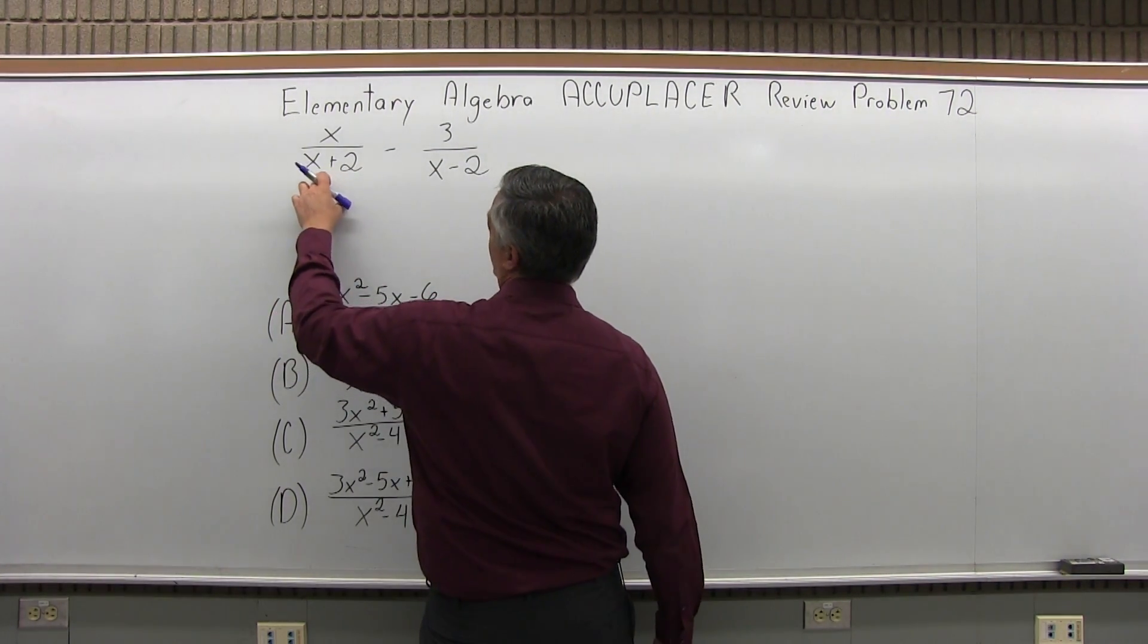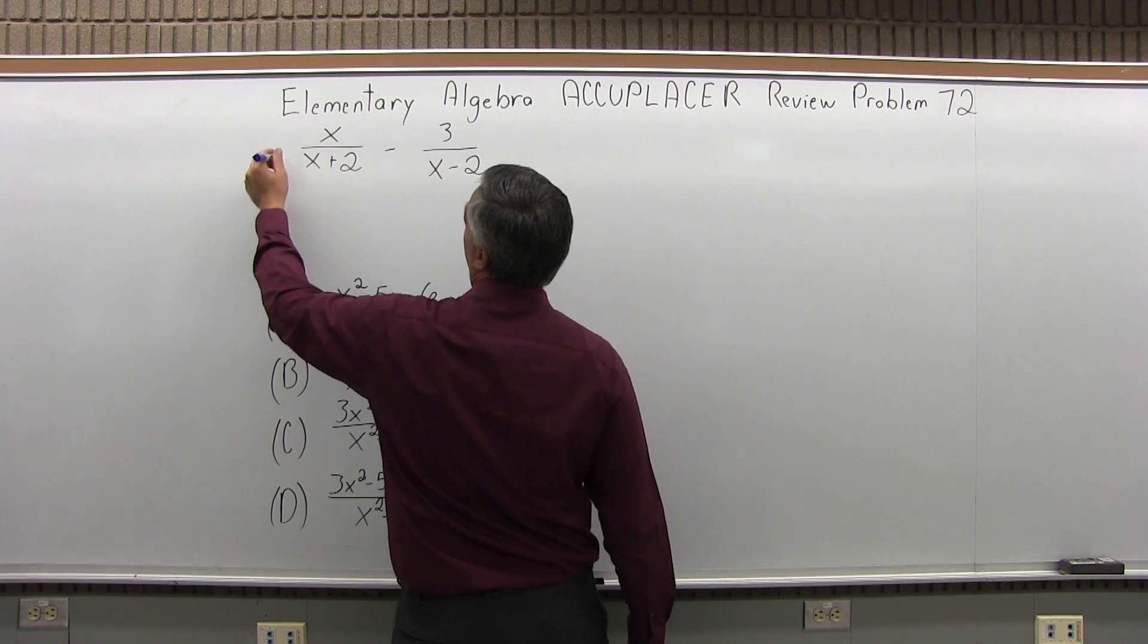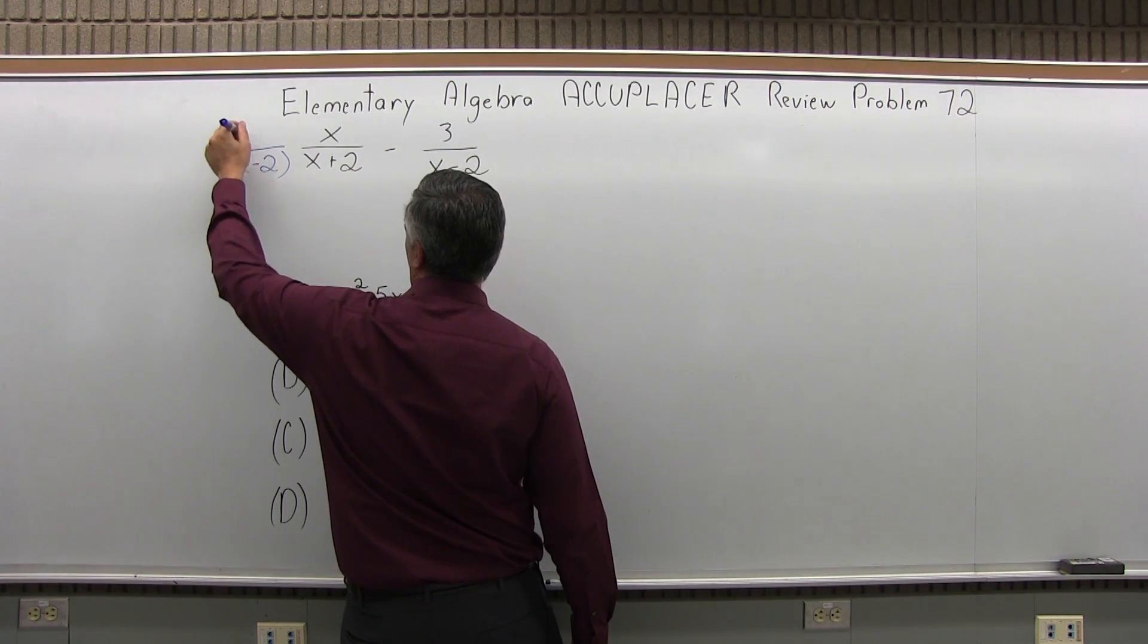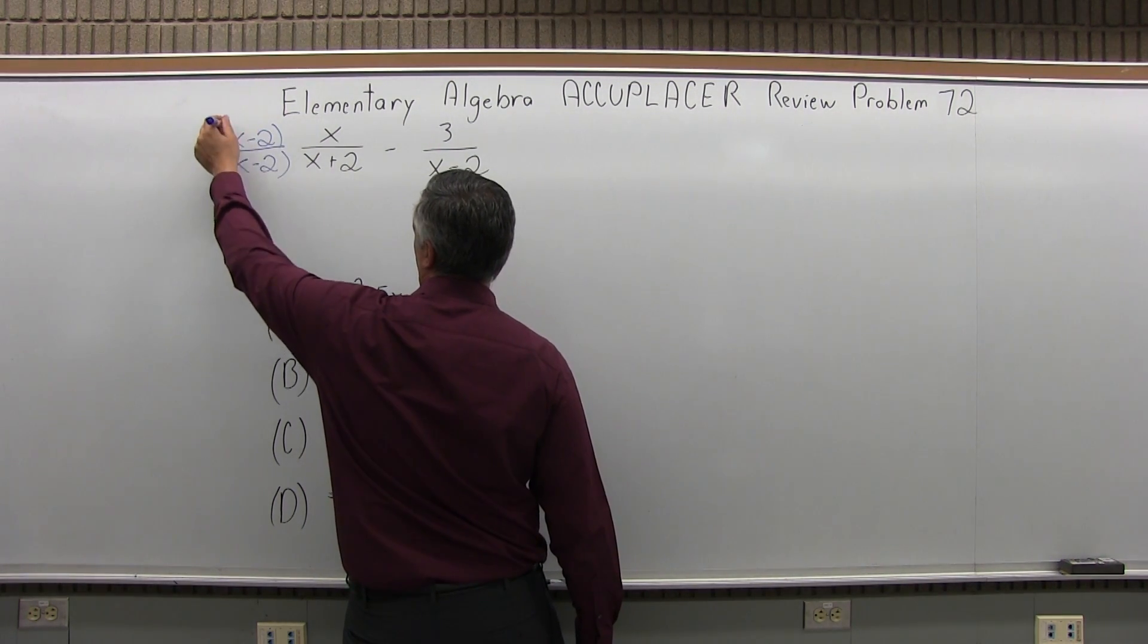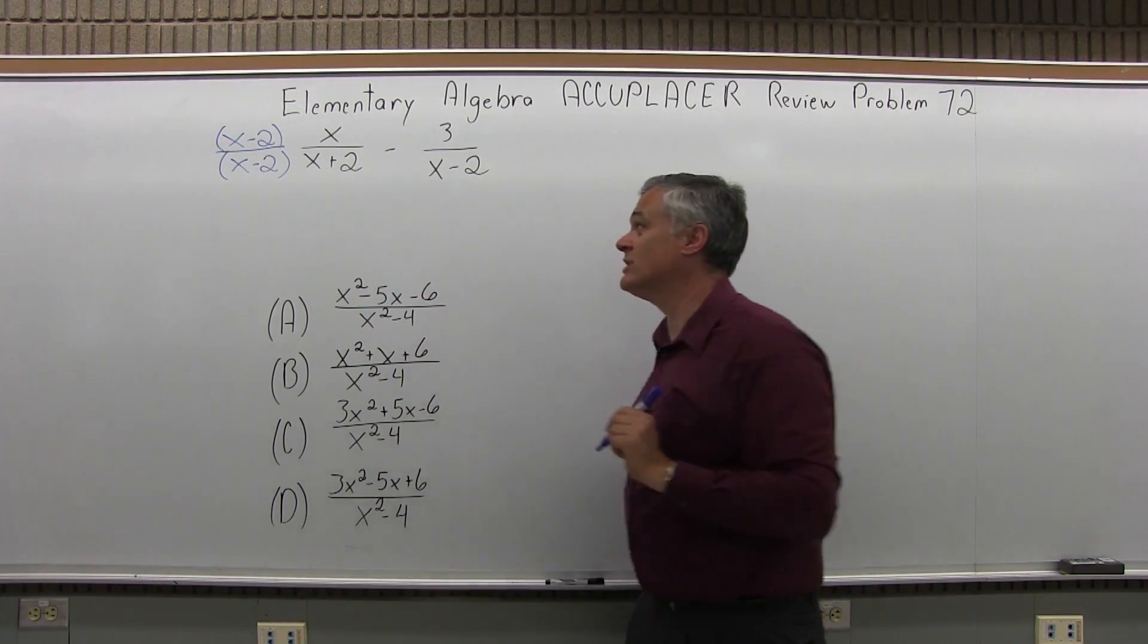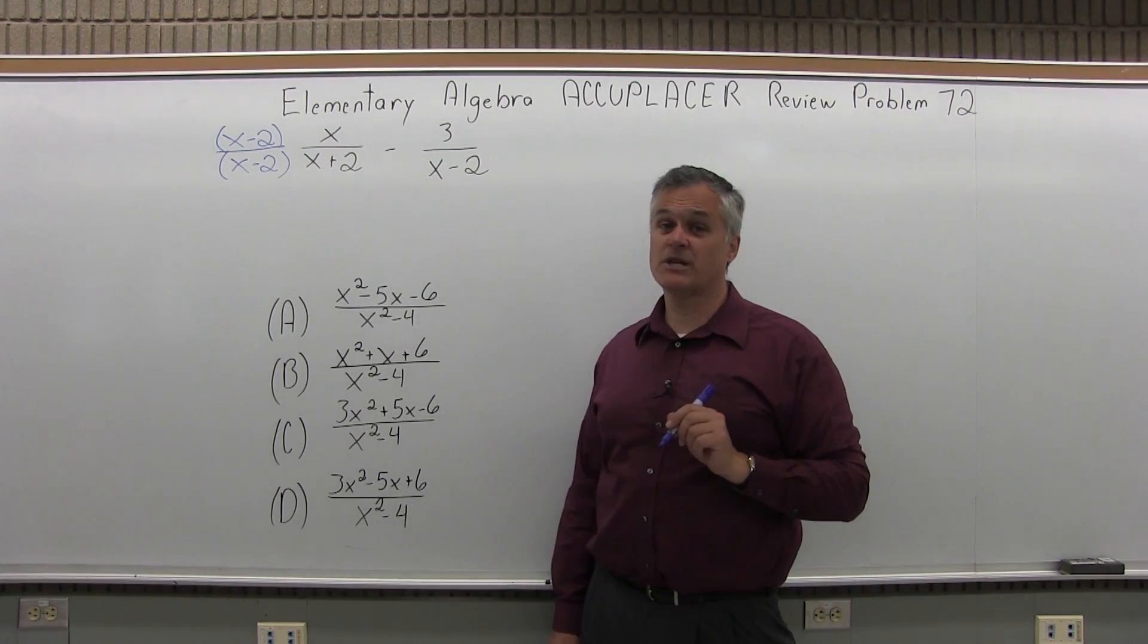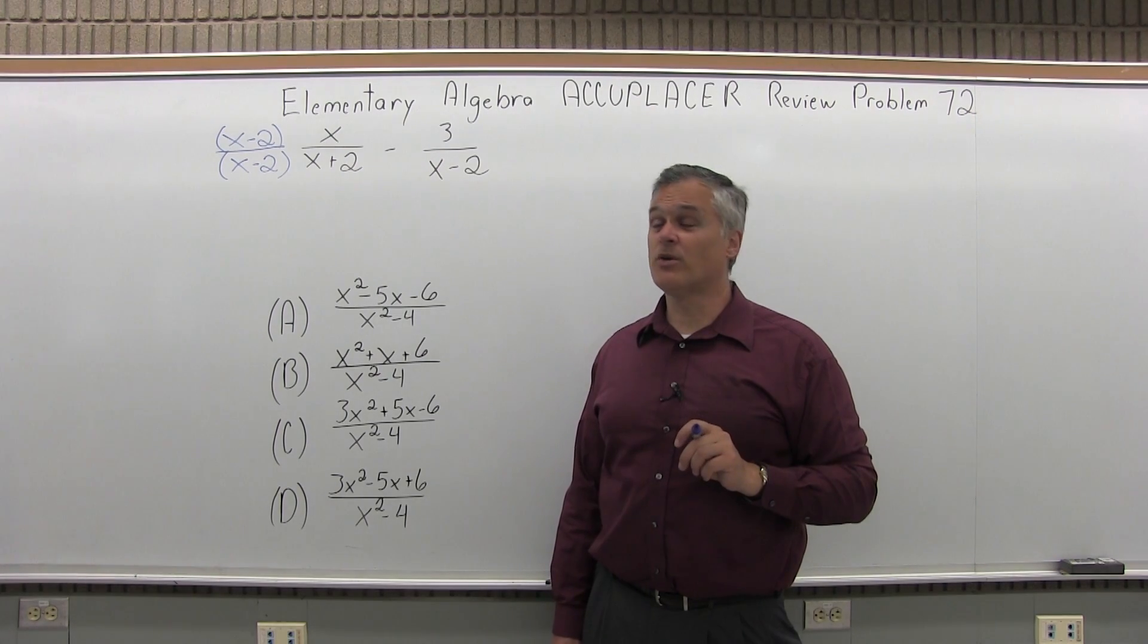So the first fraction that's over x plus 2, I am going to multiply times x minus 2. But if I do it in the denominator, I have to do it in the numerator also. So basically that first fraction is getting multiplied times a funny looking 1. x minus 2 over x minus 2 will reduce to 1, no matter what x is.